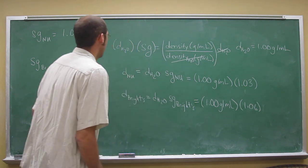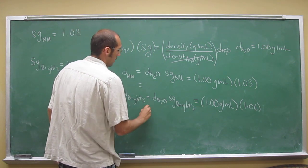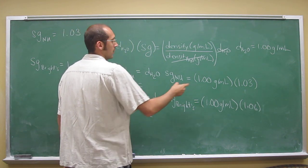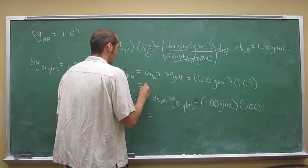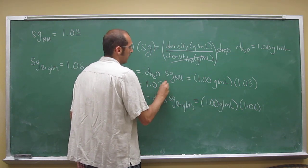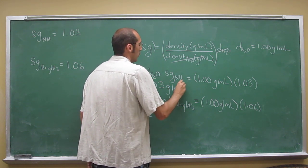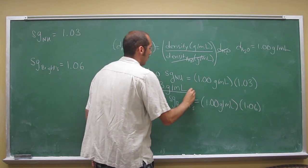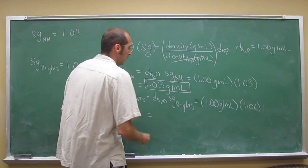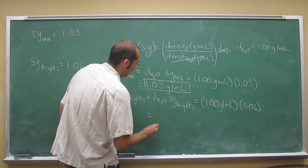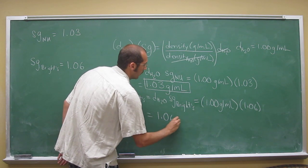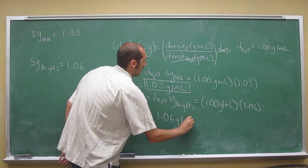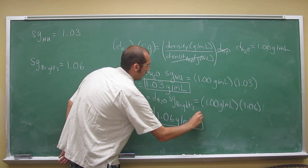That gives you the density of each one. You just add the units, grams per mil, onto the end. So normal urine density is 1.03 grams per mil, and the density of Bright's is 1.06 grams per mil.